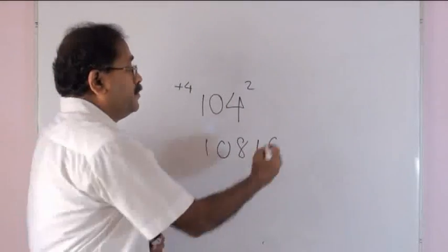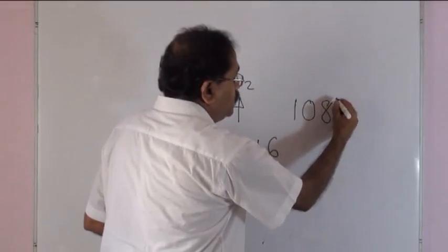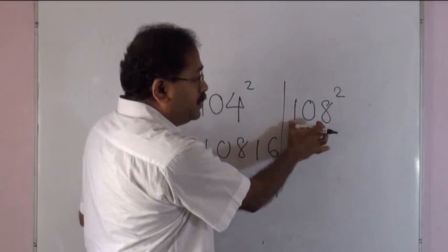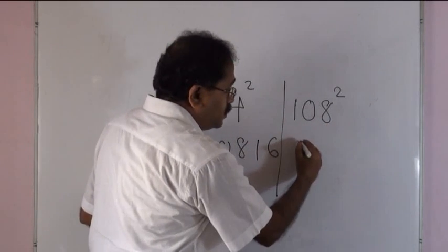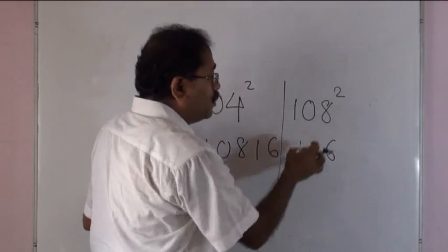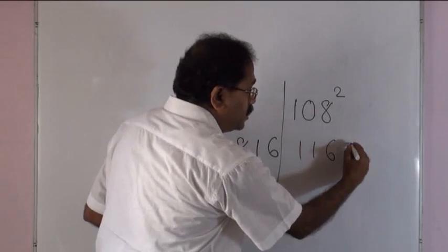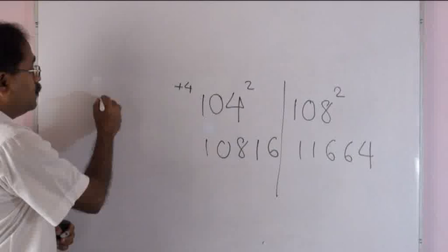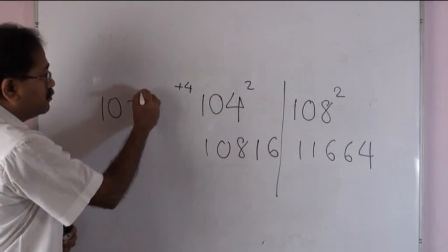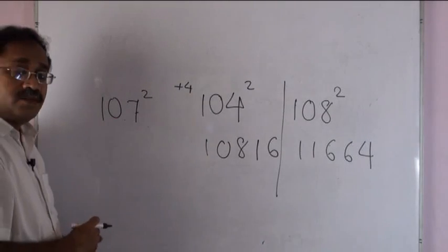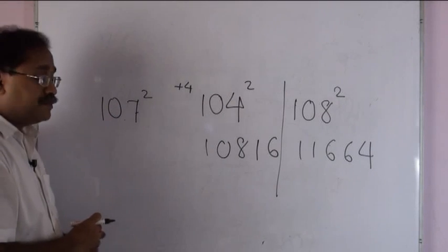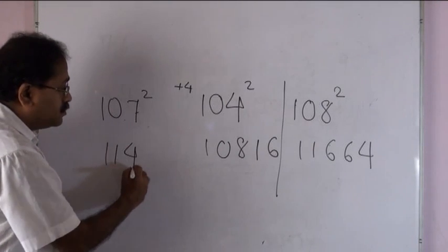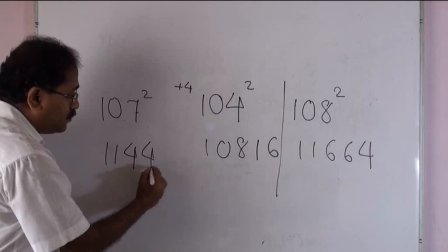Take another number: 108 squared. This is 8 more than 100, therefore 108 plus 8 is 116, followed by 8 squared, that is 64. Or 107 squared — this is 7 more than 100, so 107 plus 7 is 114, followed by 7 squared, which is 49.